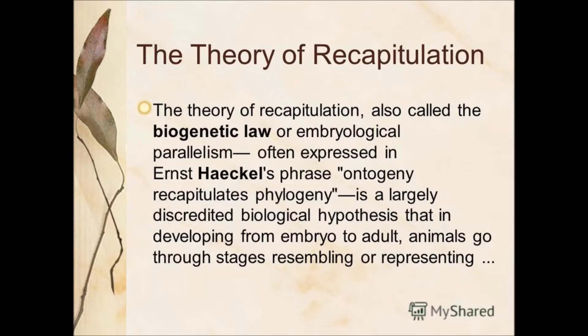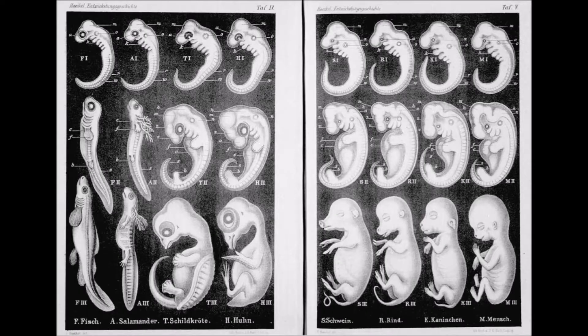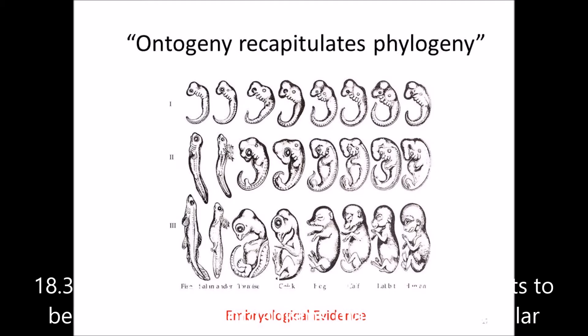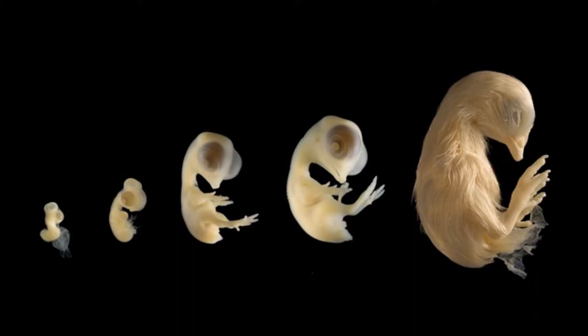The idea that developmental stages going from embryos to adulthood strongly supports evolution. It's a concept of biology known as biogenetic law. Ernest Heckel, the same man who was discovered to draw fraudulent embryos, phrased this idea into three words: ontogeny recapitulates phylogeny. In layman terms, it means that the growth and development of an organism's life is a replay of the evolutionary stages that their common ancestors have gone through.